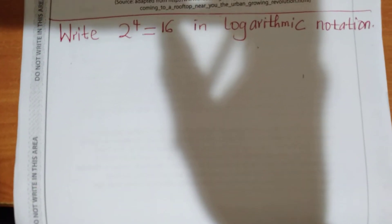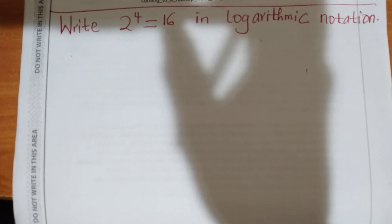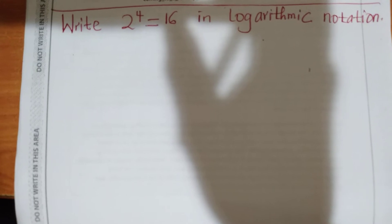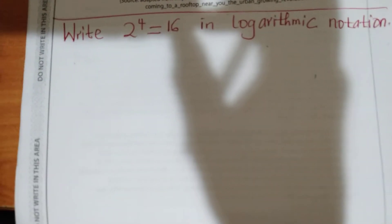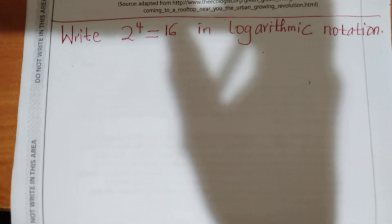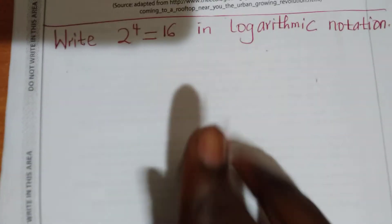Now, we are supposed to write 2 raised to power 4 is equal to 16 in logarithmic notation. The easiest way to do this is this. Follow through.